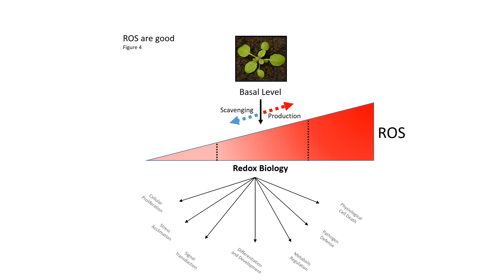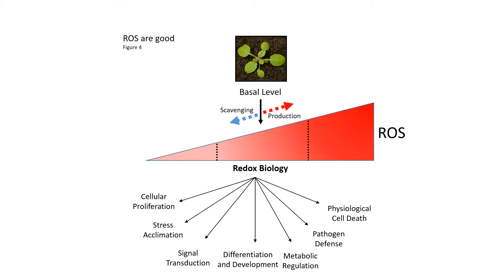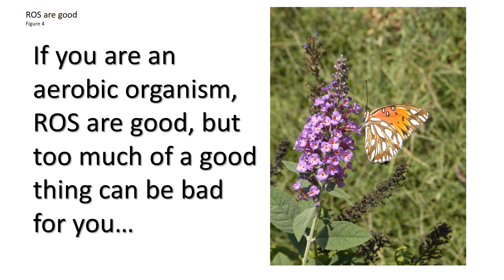So in order for plants to maintain a healthy life cycle, they need to keep reactive oxygen species within the redox biology range and enable the maintenance and regulation of many, many different processes. So remember, if you're an aerobic organism, ROS are good, but too much or too little of a good thing can be bad for you. So just keep ROS at the right level and be happy.